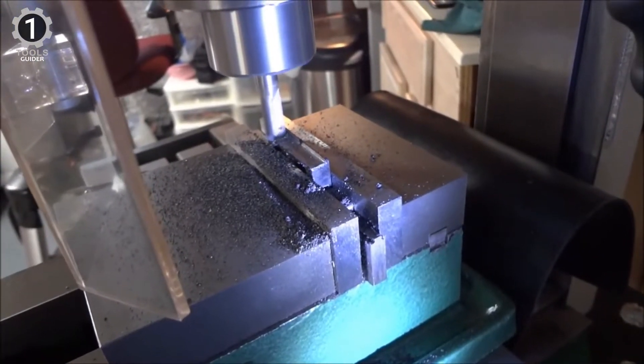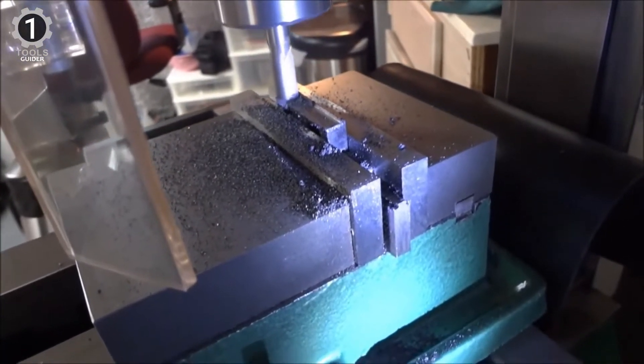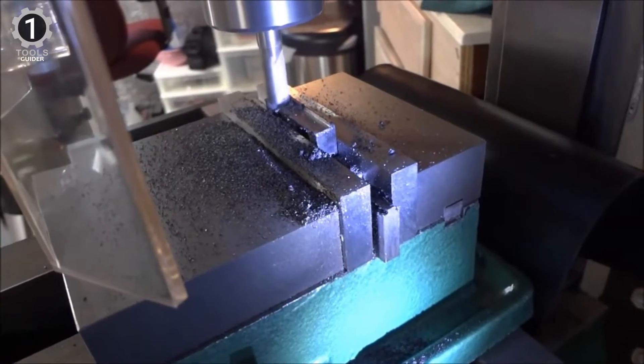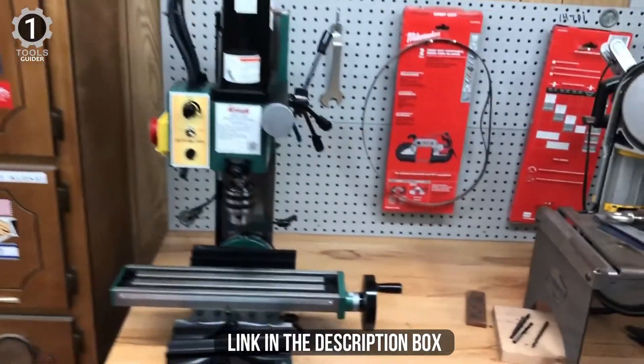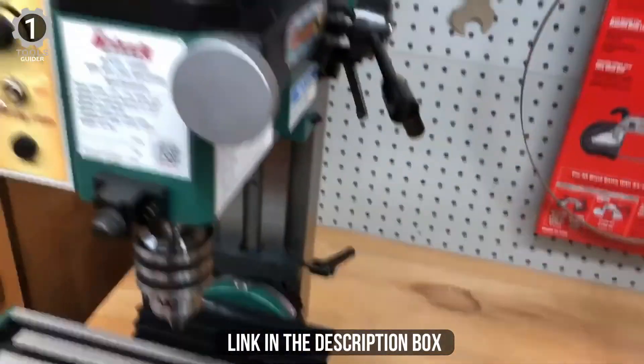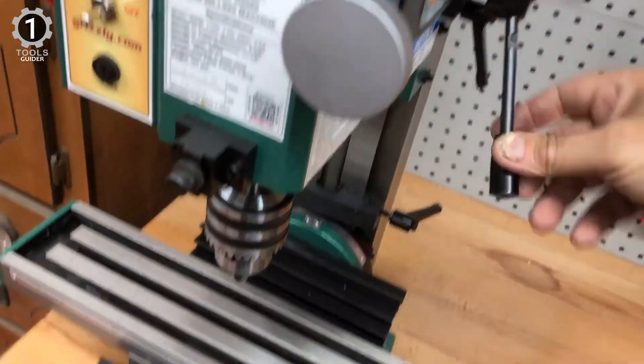The G0758 also offers a potent motor at 600 watts. Enough grunt to do everything you want a mini mill to do. Its footprint is more significant than the OPM machine, and that's not surprising given the table size here.